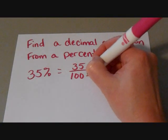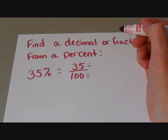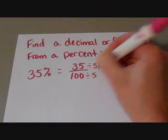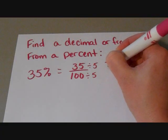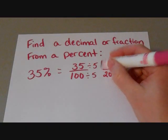So, again, when we simplify, we find a number that we can divide both of these numbers evenly by. And in this case, it's going to be five. So thirty-five divided by five is seven. And one hundred divided by five is twenty. There's your fraction.